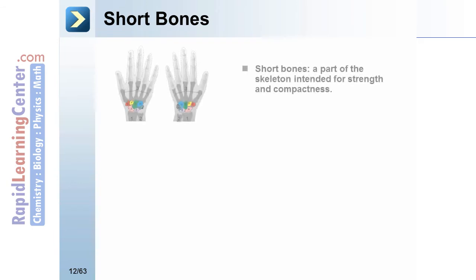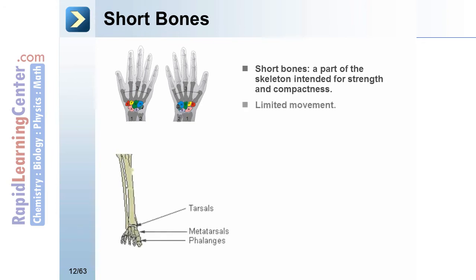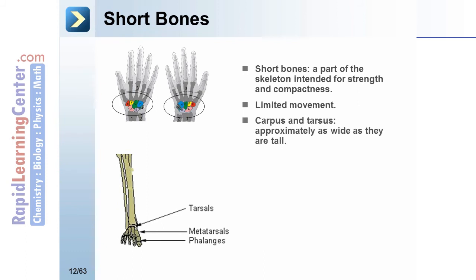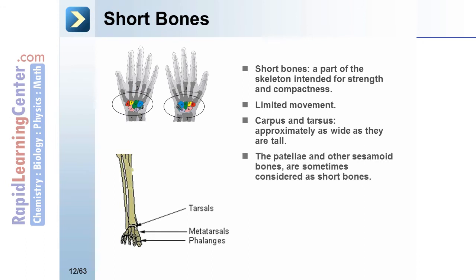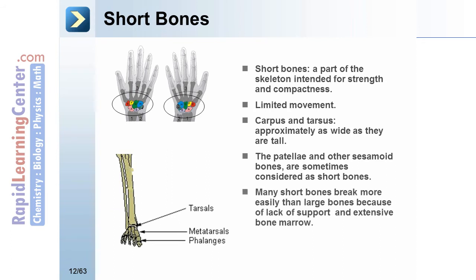Short bones are part of the skeleton intended for strength and compactness with limited movement, such as the carpus and tarsus, and are approximately as wide as they are tall. The patella and other sesamoid bones are sometimes considered short bones. Many short bones break more easily than large bones because of lack of support and extensive bone marrow.